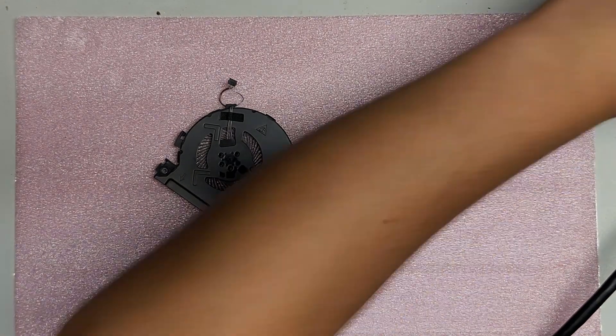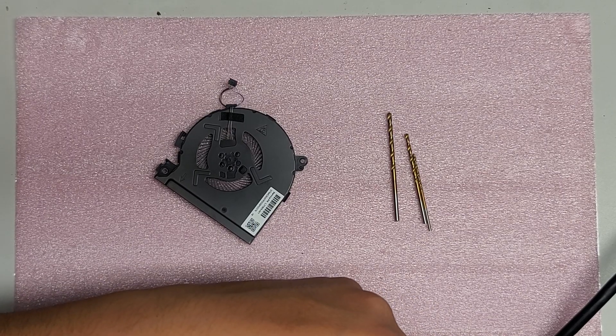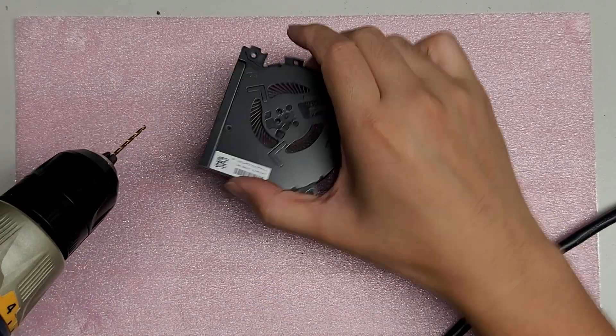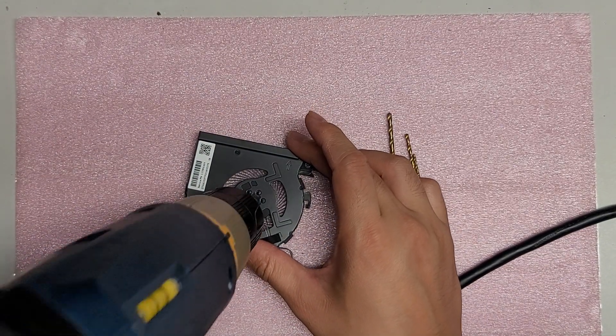So once you get it started, switch to a smaller bit. Or not a smaller bit—well, I guess technically it's smaller. Then basically what you want to do is try and hollow out the center of this plastic piece.